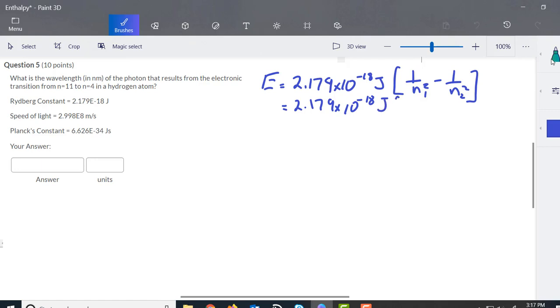Now I try and arrange this so you get a positive energy value, which means you want to put the smaller N first, which would be 4 squared minus 1 over 11 squared over here.